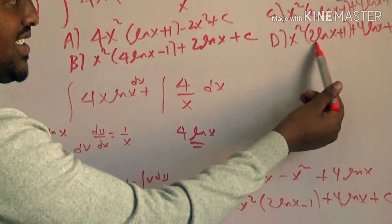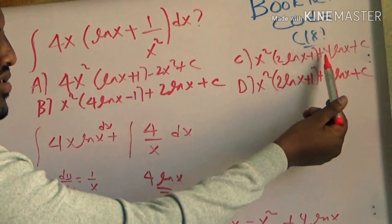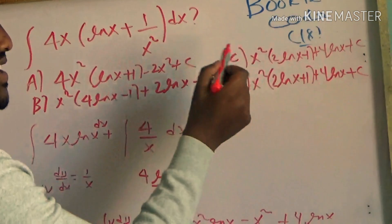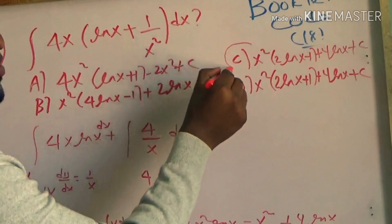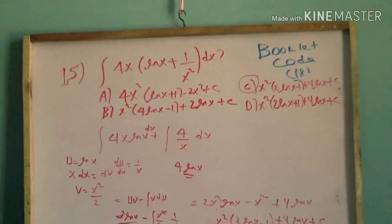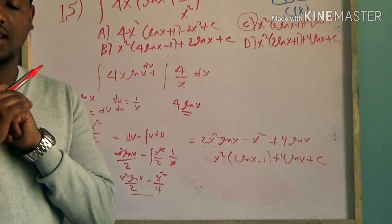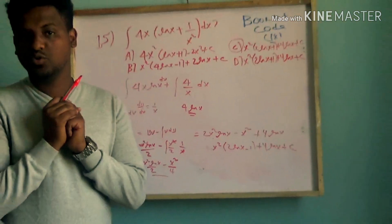2x-squared times (1 minus 1) plus 4 ln(x) plus C. That's the final answer for the integration.